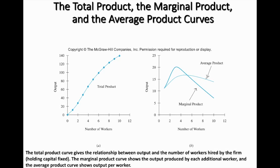To draw the value of marginal product of worker, we take the marginal product of worker curve and multiply by price ($2). Whatever value is along the marginal product curve times 2 gives the new VMP curve. The same applies for the value of average product of worker — take average product times the price level to derive the VAP curve.